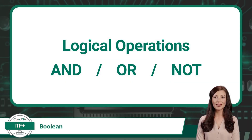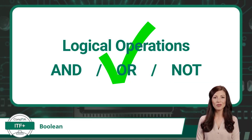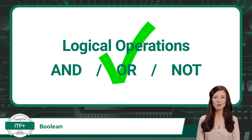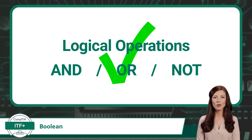With the Boolean data type, we will be focused primarily on logical operations. Using the AND, OR, and NOT operations, we are able to combine and manipulate conditional statements to derive a true or false output. Let's take a look at each of these logic operations now.